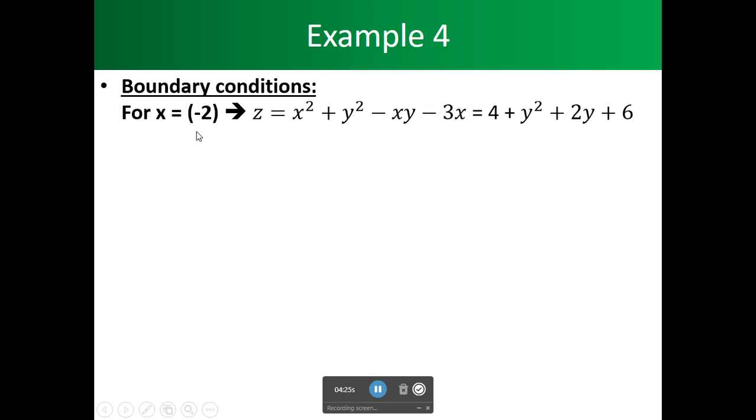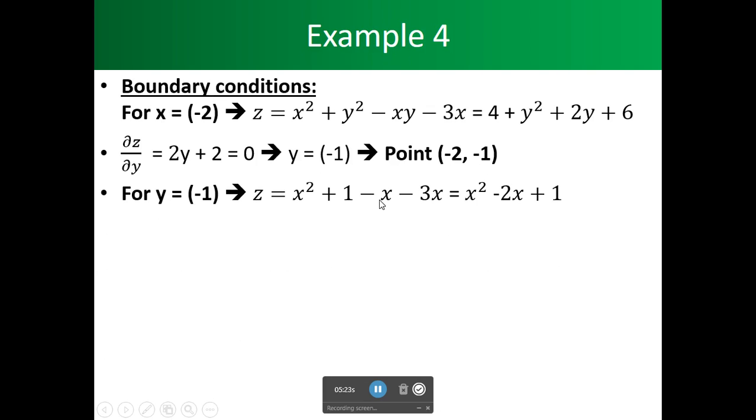For the boundary, for x equals negative 2, we're going to plug that back into our equation. Then we get 4 plus y squared plus 2y plus 6. Then we take the partial with respect to y. We get 2y plus 2. So here we see that y equals negative 1 when x equals minus 2. So we have minus 2, minus 1, another point on our boundaries.